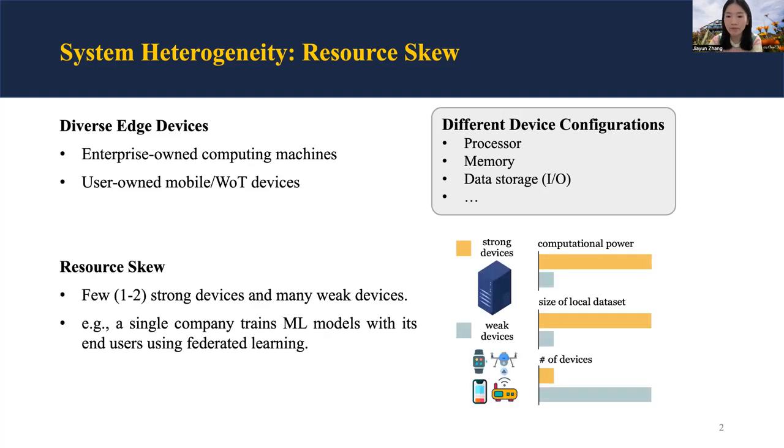A typical assumption of previous work is that there are equally many strong and weak devices. However, in reality, we often see resource-skewed environments, where one or two strong devices hold a substantial amount of data resource, accompanied by a large number of weak devices.